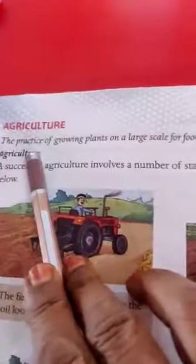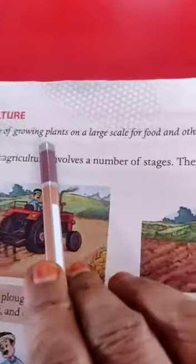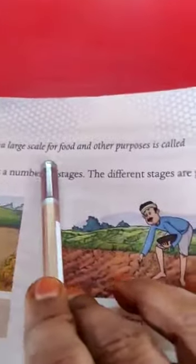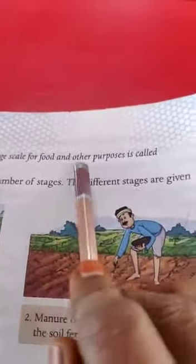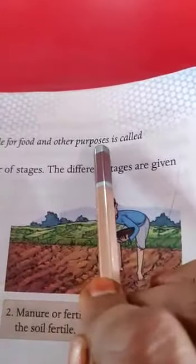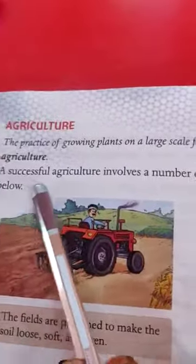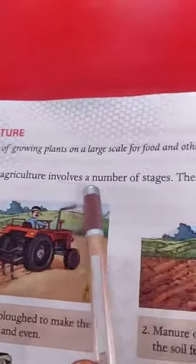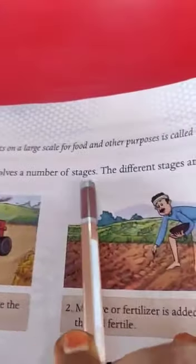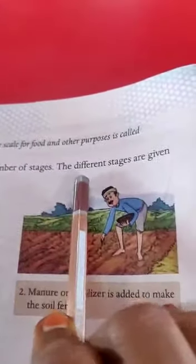Agriculture. The process of growing plants on a large scale for food and other purposes is called agriculture. The success of agriculture involves a number of stages.